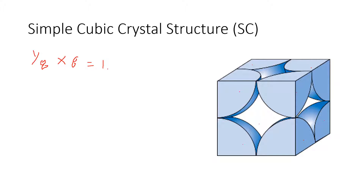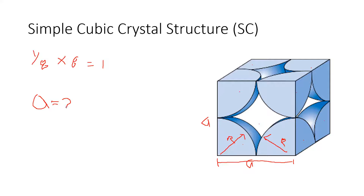To derive the relationship between lattice parameter length and atomic radius, one way is to look at the front face of the unit cell. The lattice parameter length is known as the variable a, and the radius of one atom is r. From here we can see that the lattice parameter length a equals two radii, so we can write a equals 2r.